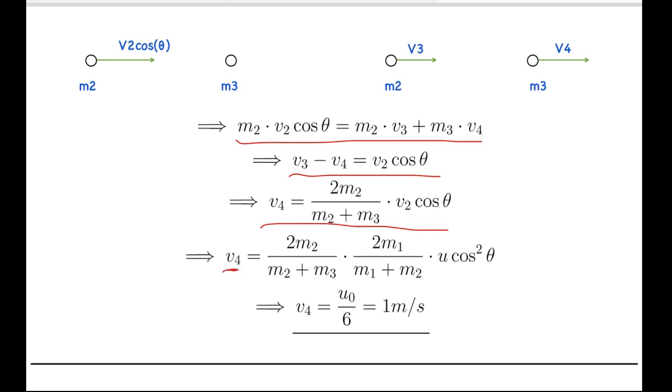From here, we needed to find v4, and so we have found v4. We substitute the value of v2 back from the first collision. We get the value of v2 to be 2m1 by (m1 + m2) times u cos theta. So the final expression for v4 will be 2m1 by (m1 + m2) times u cos theta.